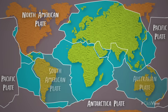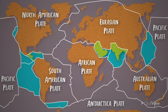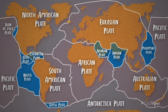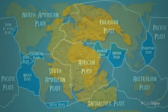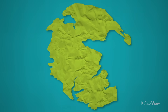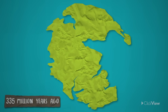There are seven large key plates and several smaller plates, and our lands and oceans lie on top of them. Did you know that all of the continents that we know today once formed a single supercontinent? This supercontinent existed 335 million years ago, and we call it Pangea.